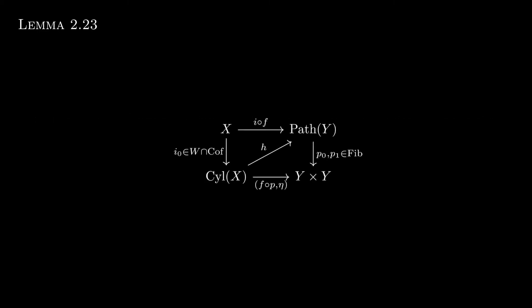The top map is a composite of x to y, and y to the path space via inclusion. The only other ambiguous map is maybe the bottom one. It is a map from cyl x to x to x to y on one of the y's, and the assumed left homotopy on the other y.